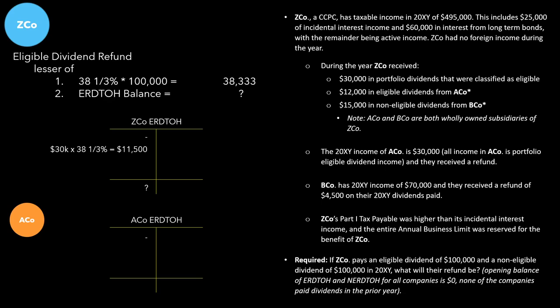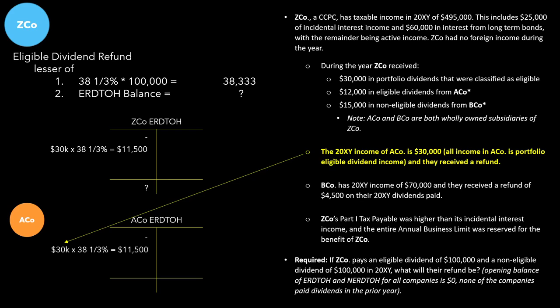ACO's income is $30,000, which is portfolio eligible dividend income, and they received a refund. We take $30,000 × 38⅓% and get $11,500 — this is the Part 4 tax on portfolio dividends for ACO. ACO does not own any subsidiaries, so there is no percentage of a refund to claim from a connected company for ACO, meaning that is zero. ACO's eligible RDTOH balance is therefore $11,500.